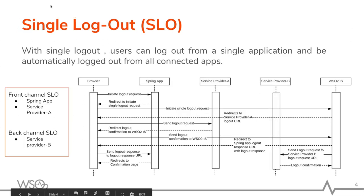Spring Security supports the SAML2 Single Logout Protocol to log out from a Spring application that has already been logged in through a SAML2 Identity Provider, while at the same time logging out from all other applications the user is logged into through the SAML2 Identity Provider. SAML2 Single Logout provides two types of bindings to send logout requests to session participants; however, Spring Security currently supports only Front Channel Synchronous Binding. You can refer to the provided sequence diagram for a clear understanding.